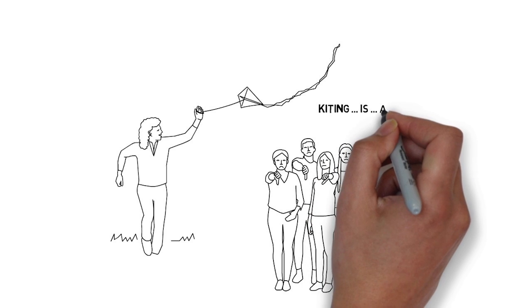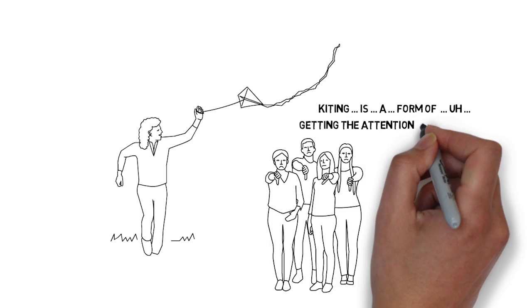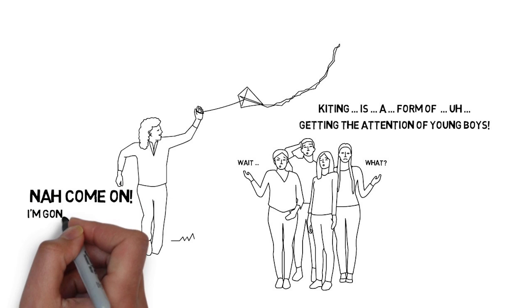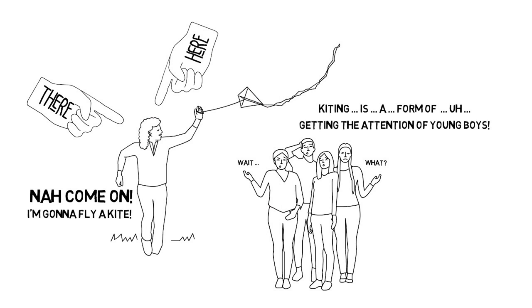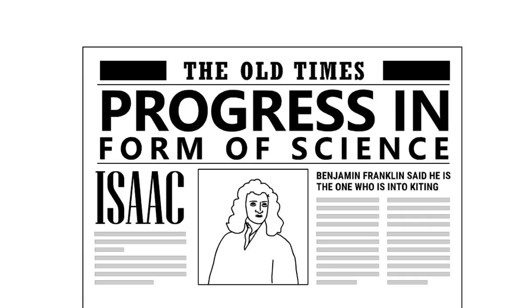He said kiting is a form of getting the attention of young boys and Newton was like, nah, come on, I'm gonna do this on my own. I'm gonna fly a kite and I'm gonna get these people's attention. So he did that and he made progress in the form of science.